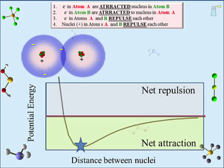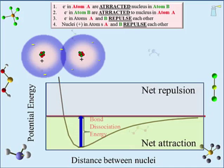It is at the maximum net attraction that the atoms form a bond. The distance between the nuclei at that maximum net attraction is called the bond length — given here not as a particular distance but a short range of distances, because atoms jiggle in their bonds. The potential energy at that maximum net attraction is the energy released upon bond formation, and that same amount of energy is what is needed to break that bond — the bond dissociation energy. Chemistry is ultimately a study of energy.